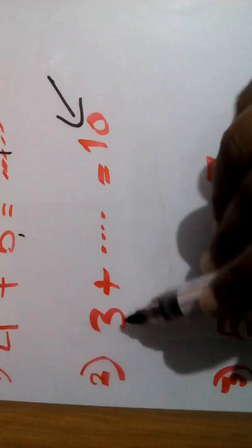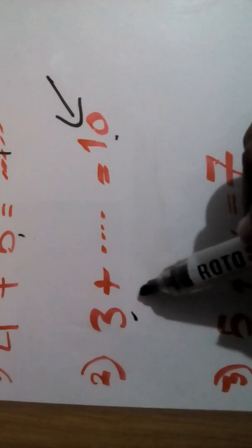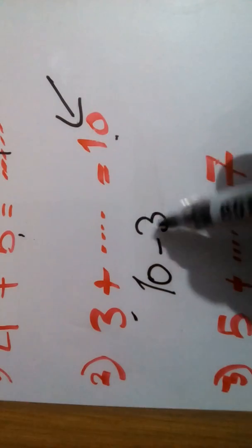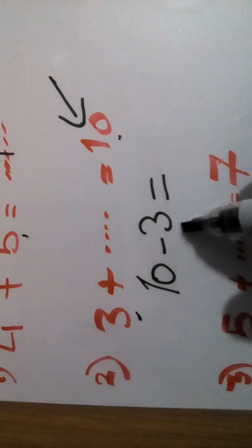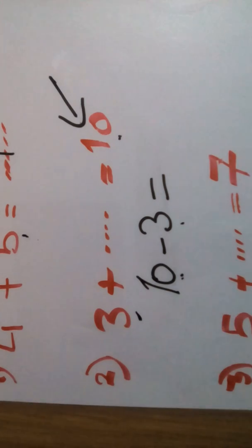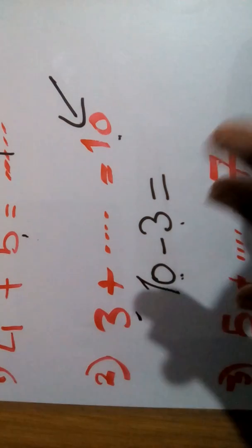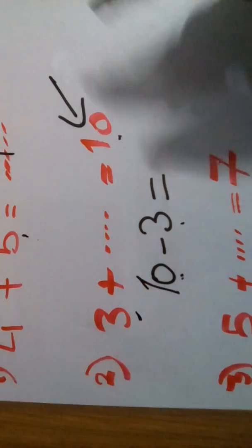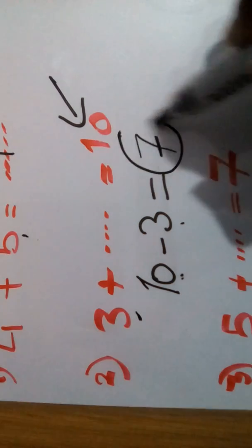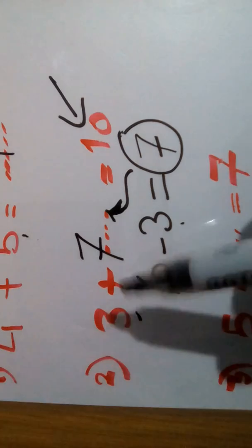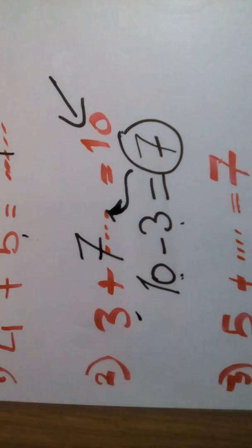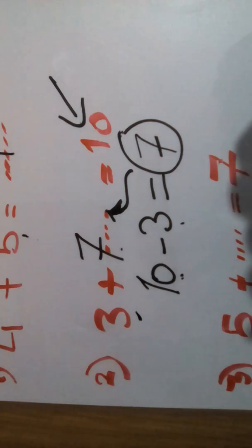What we should do: take the smallest number from the biggest number. Take 3 from 10. Count from the small to reach the big: after 3 — 4, 5, 6, 7, 8, 9, 10 — I get 7. The missing number is 7, so 3 plus 7 equals 10. Let's check: put the biggest number in my head and count — 7, 8, 9, 10. That's the right answer!